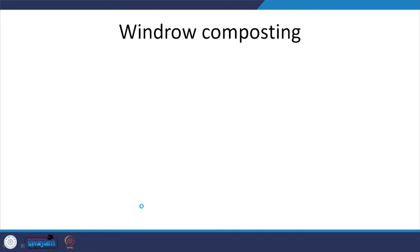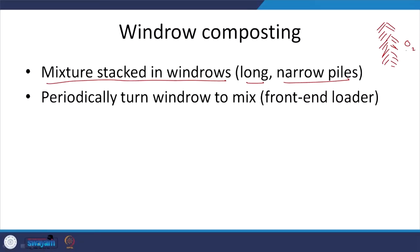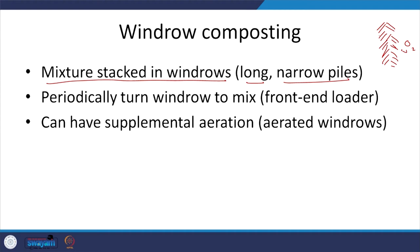Another kind of composting is windrow composting — something you would have come across in various forums. The mixture is stacked in windrows, meaning long narrow piles. Key aspects with composting include carbon-to-nitrogen ratio, temperature, moisture content, and aeration, with mesophilic, thermophilic, and again mesophilic phases. You have to turn the windrow to provide oxygen. This is typically done with a front-end loader and can have supplemental aeration if turning alone is not sufficient, giving you aerated windrows.